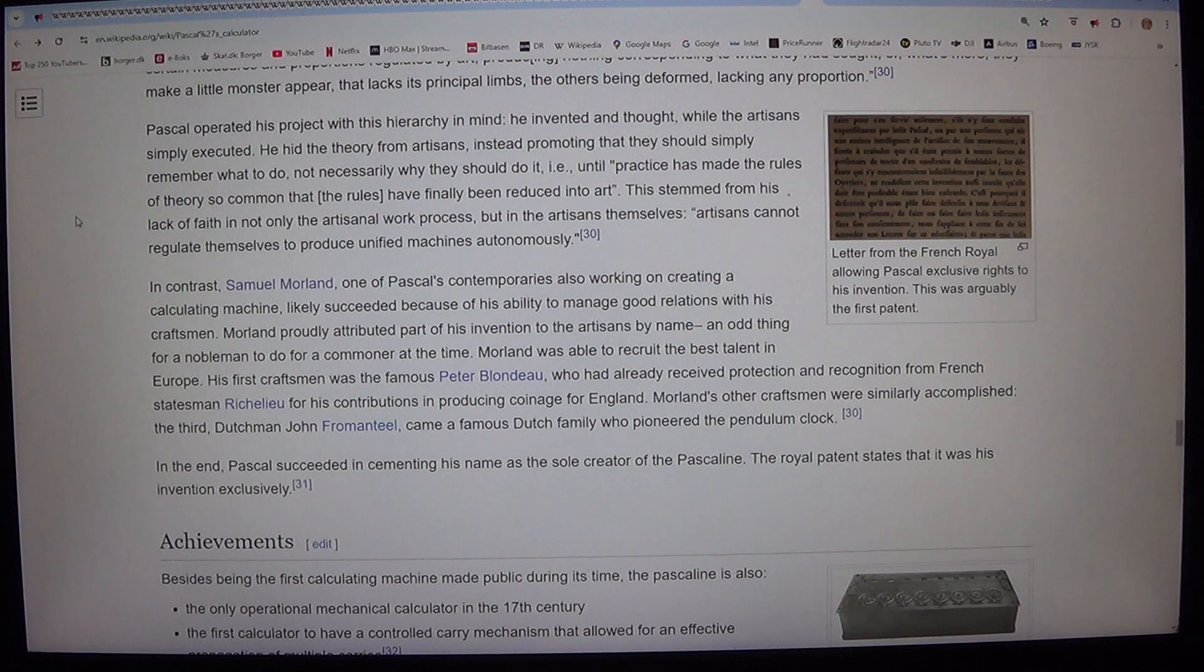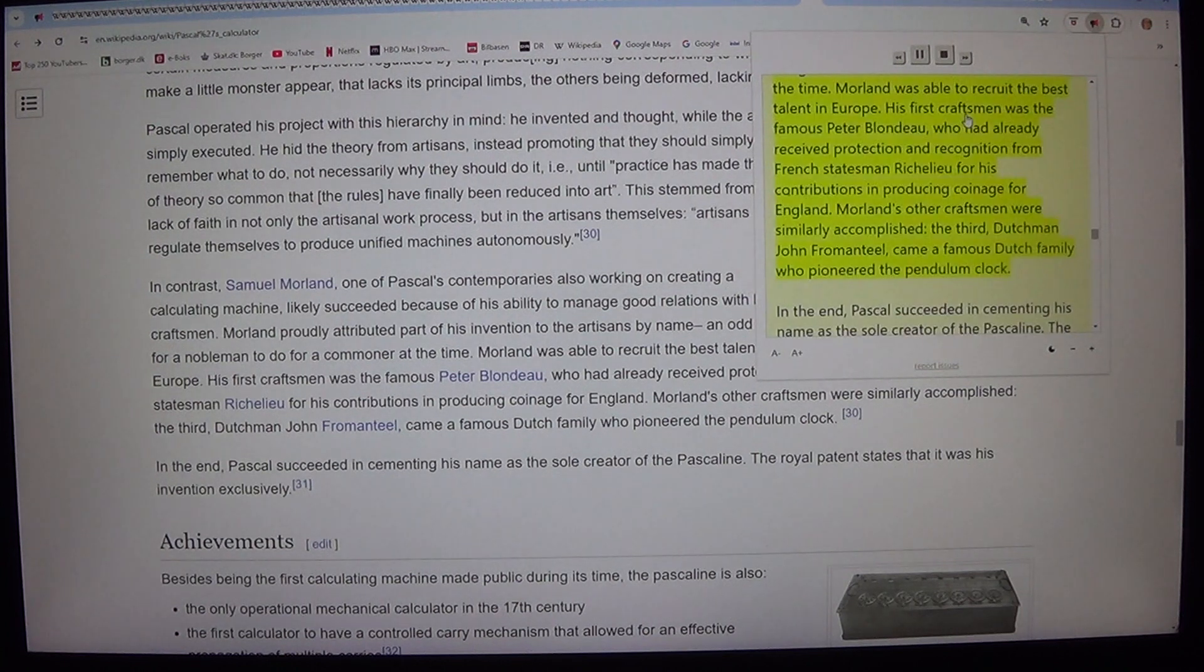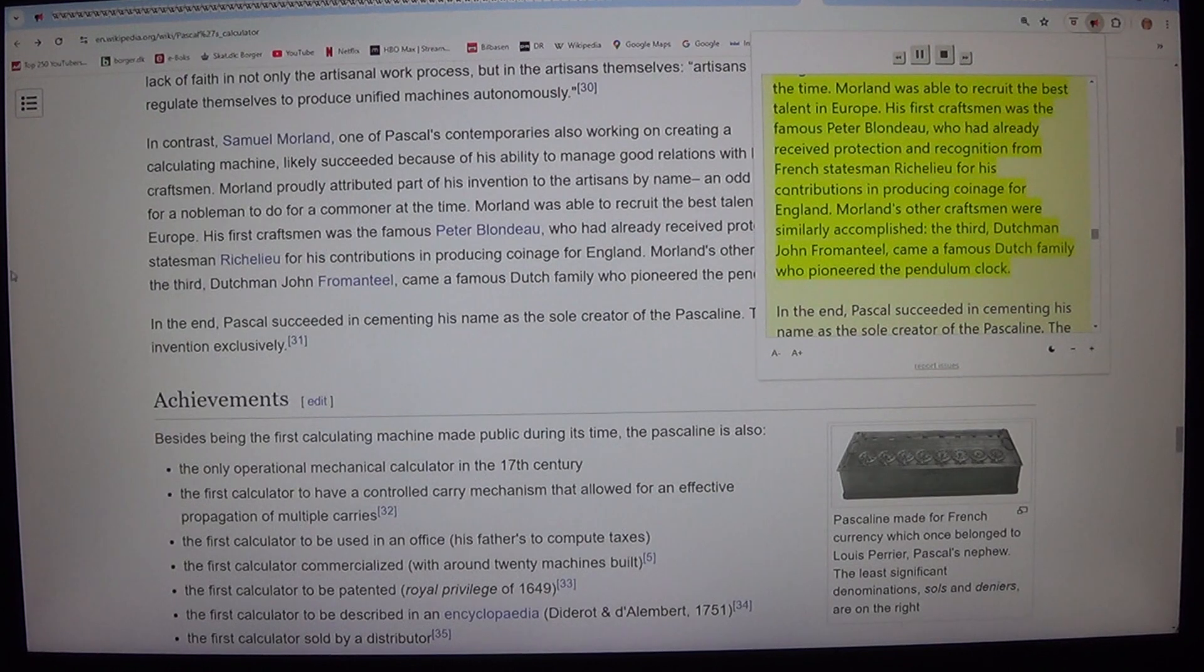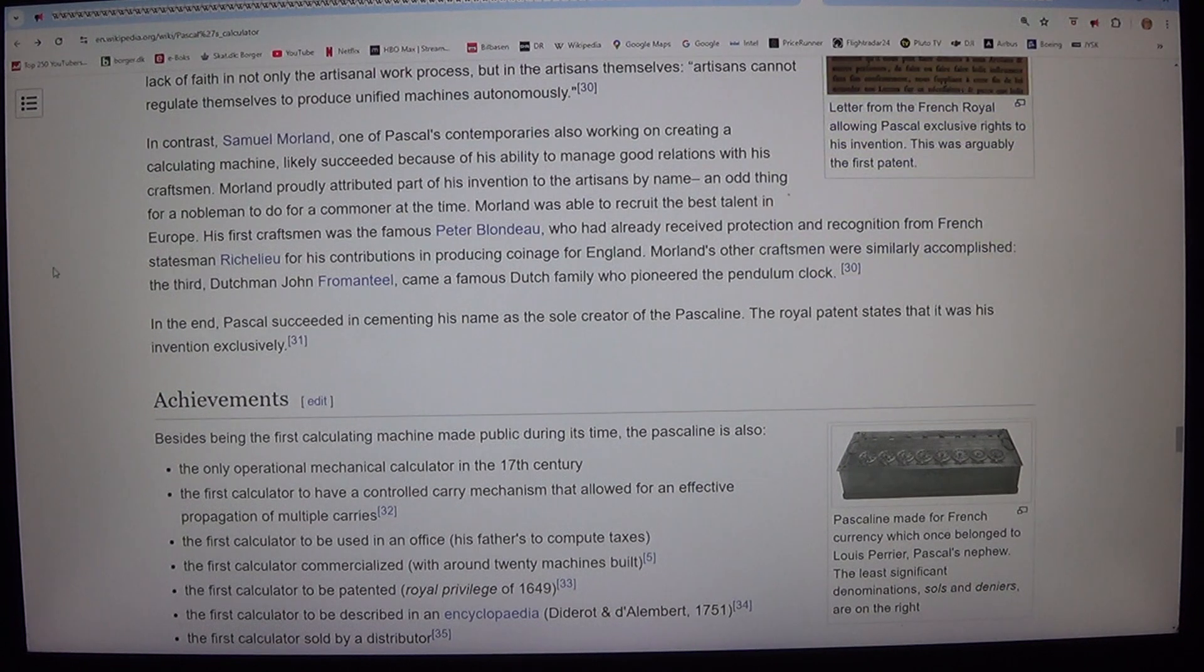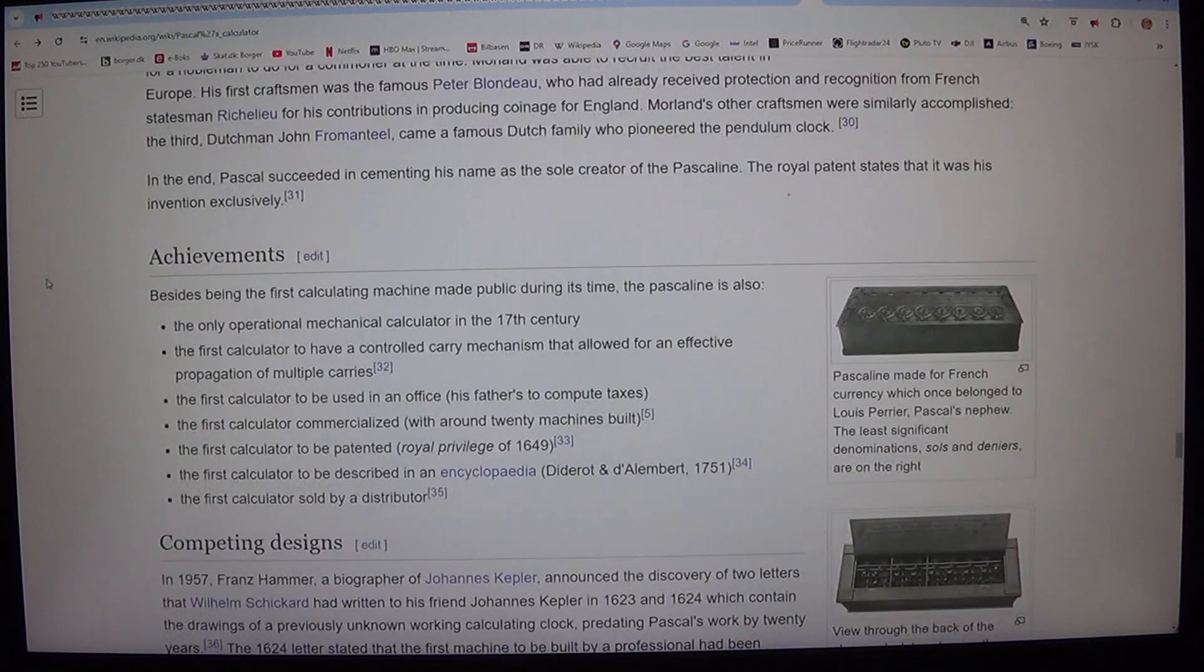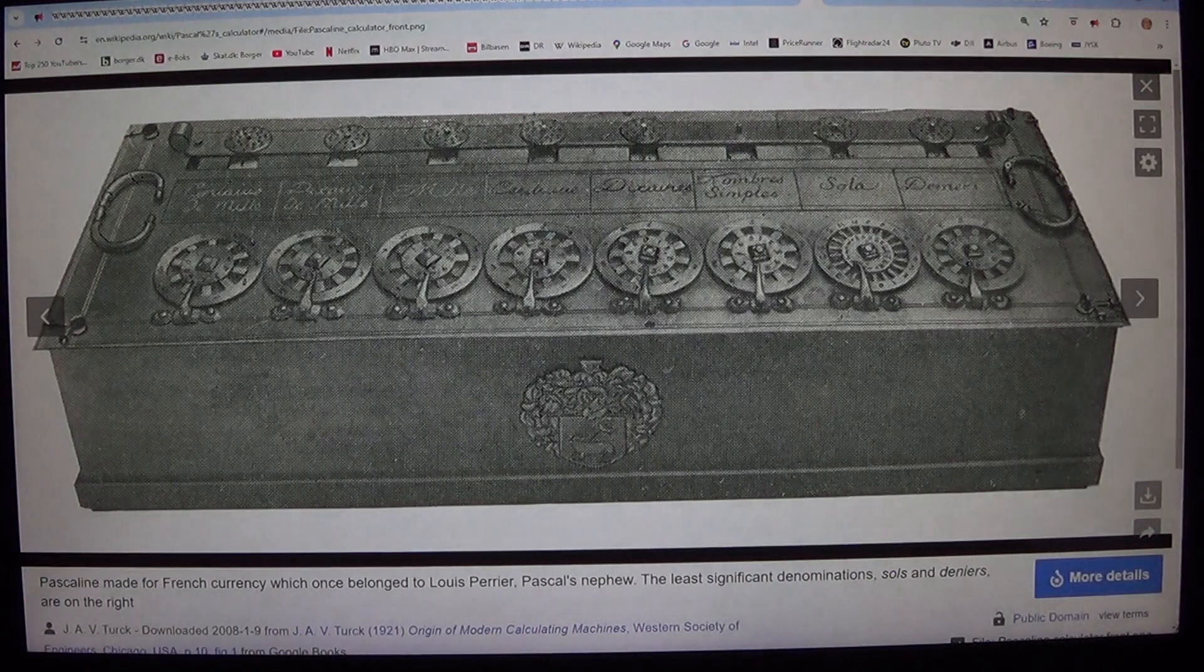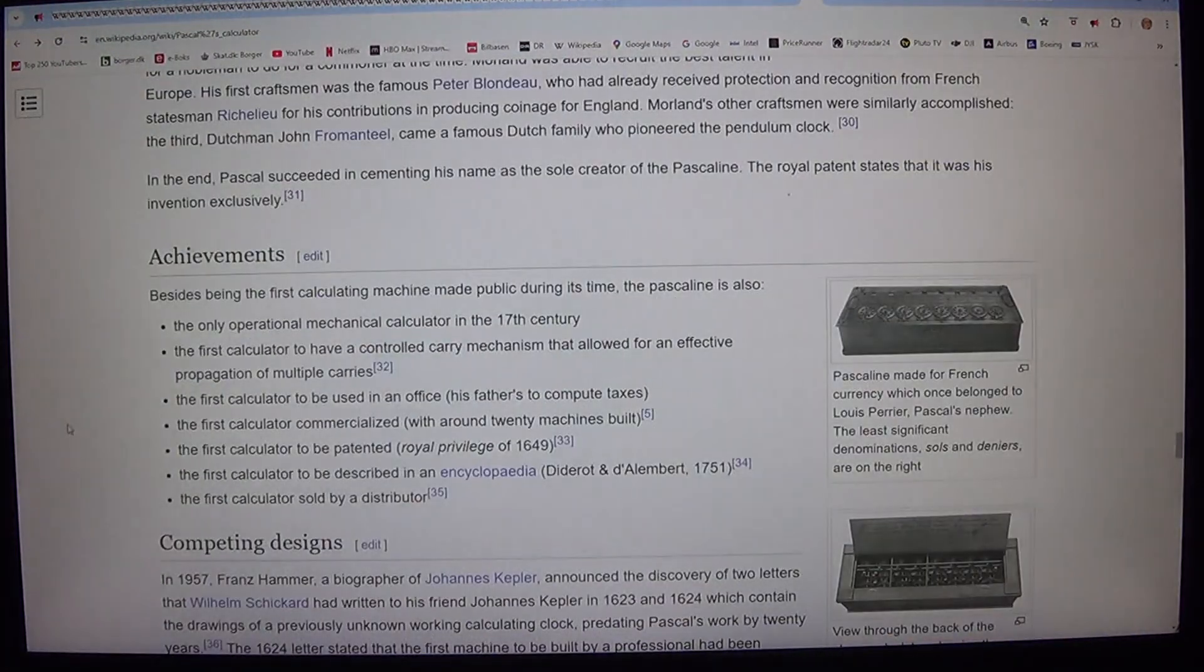His first craftsman was the famous Peter Blondio, who had already received protection and recognition from French statesman Richelieu for his contributions in producing coinage for England. Morland's other craftsmen were similarly accomplished. The third, Dutchman John Fromantille, came from a famous Dutch family who pioneered the pendulum clock. In the end, Pascal succeeded in cementing his name as the sole creator of the Pascaline. The royal patent states that it was his invention exclusively.